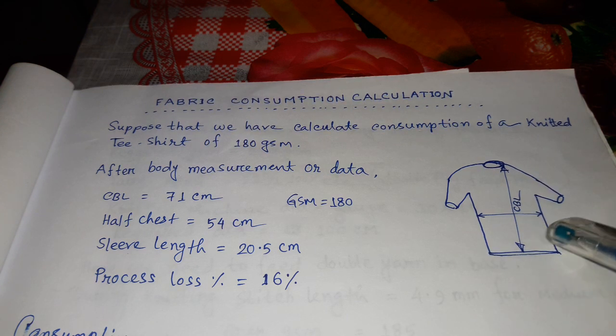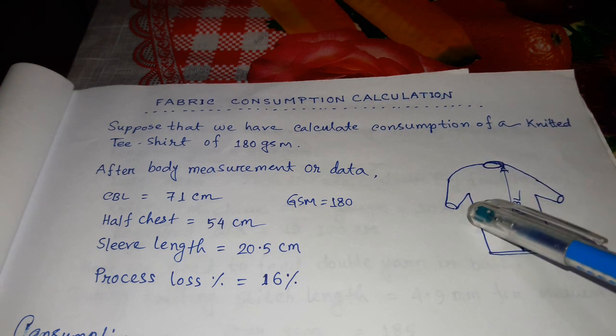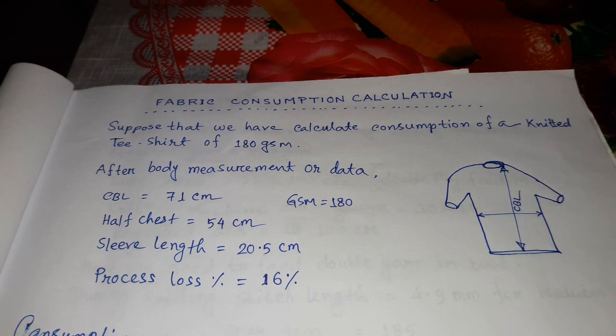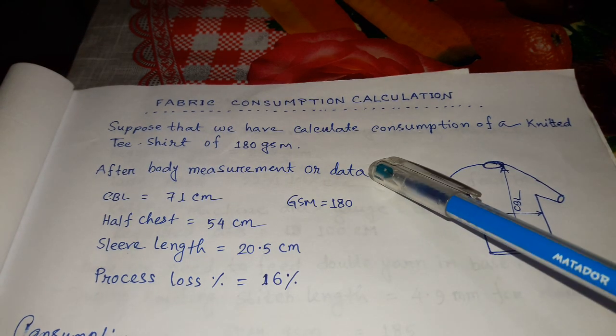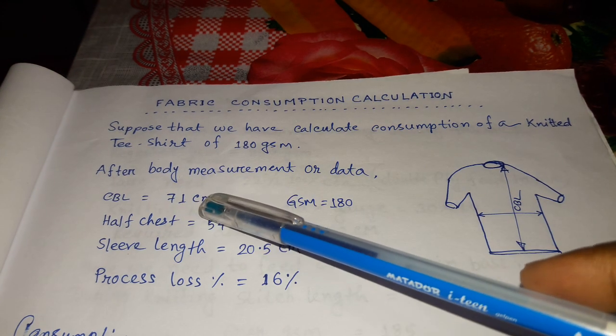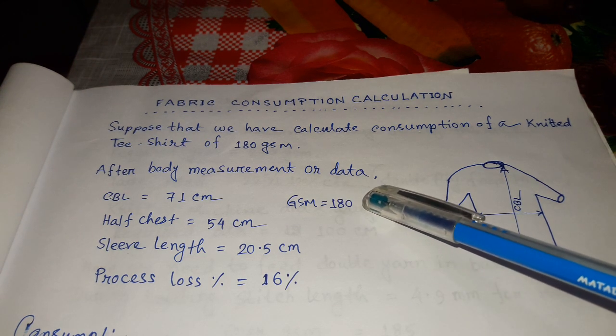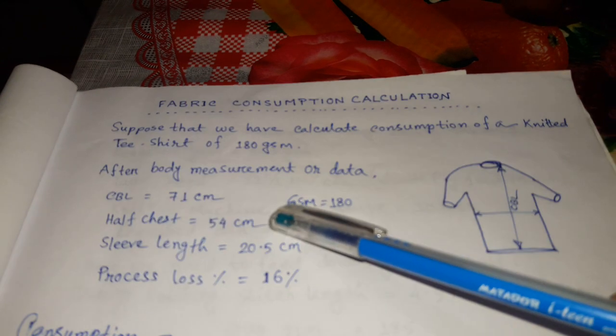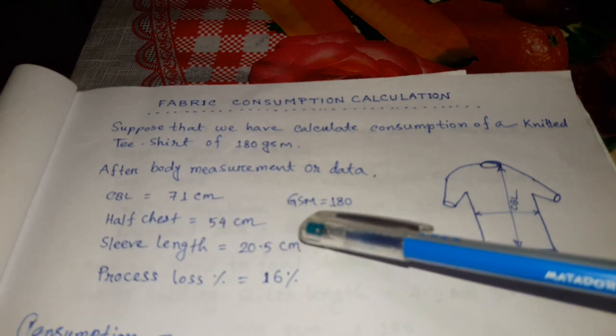I have drawn a picture of the t-shirt. This is the center back length and this is the half chest. After body measurement, the data given from buyer: center back length 71 centimeter, GSM 180, half chest 54 centimeter, sleeve length 20.5 centimeter, process loss 16%.